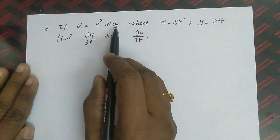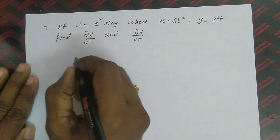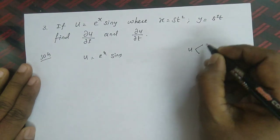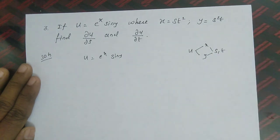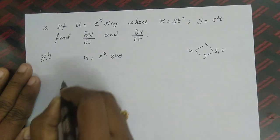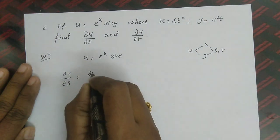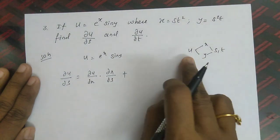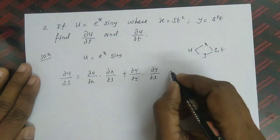If u = eˣ sin y where x = st² and y = s²t, find ∂u/∂s and ∂u/∂t. Here u is a function of x and y, and x and y are functions of both s and t. For ∂u/∂s: ∂u/∂s = (∂u/∂x)(∂x/∂s) + (∂u/∂y)(∂y/∂s). We can call this equation 1.